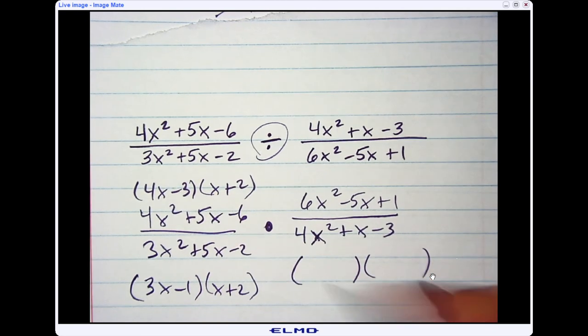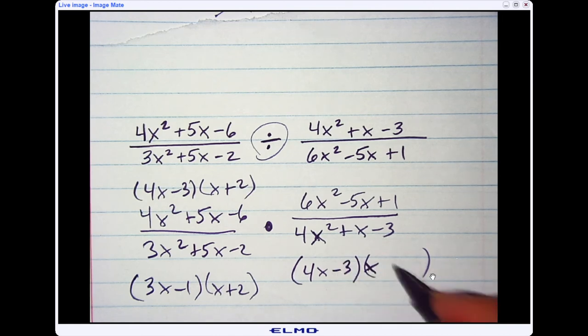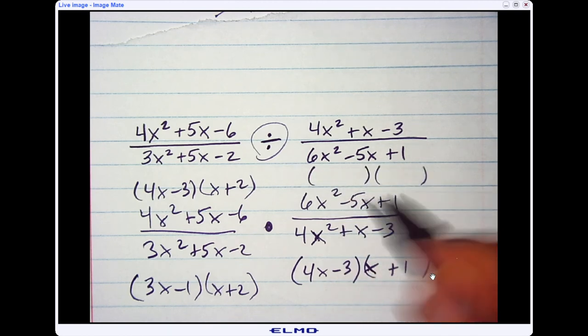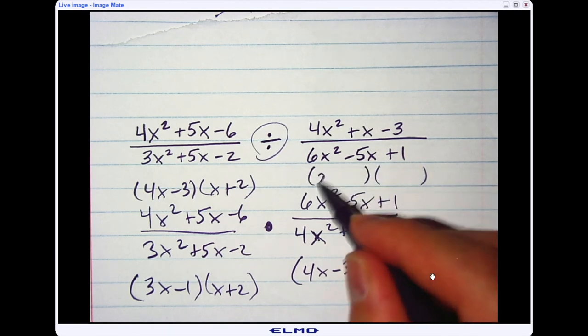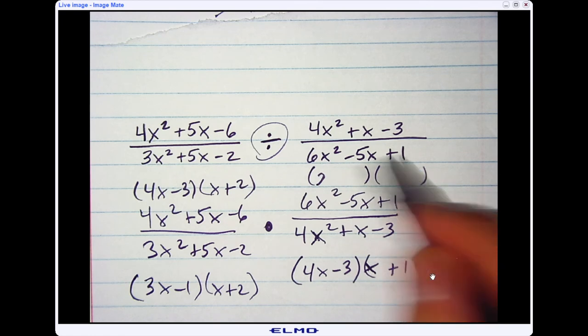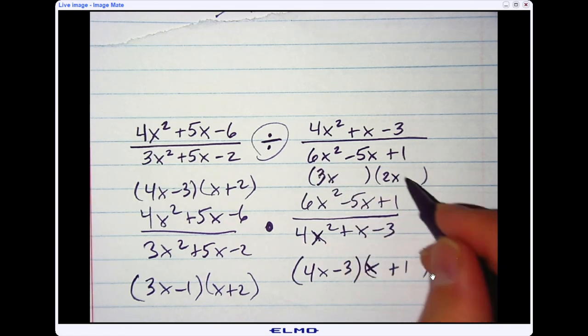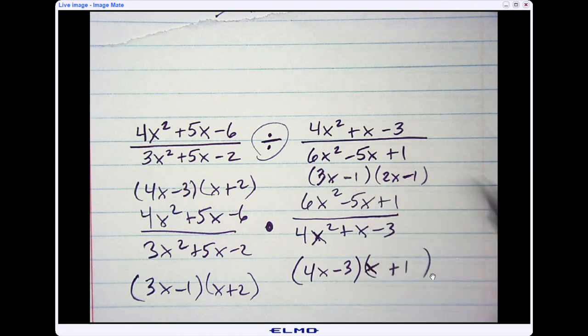I'm going to go ahead and factor this one. And then this would have to be minus 3 and plus 1. And then I factor this last one here. I'm going to have 3x and 2x. I have to make them both negative 1 to make positive 1.